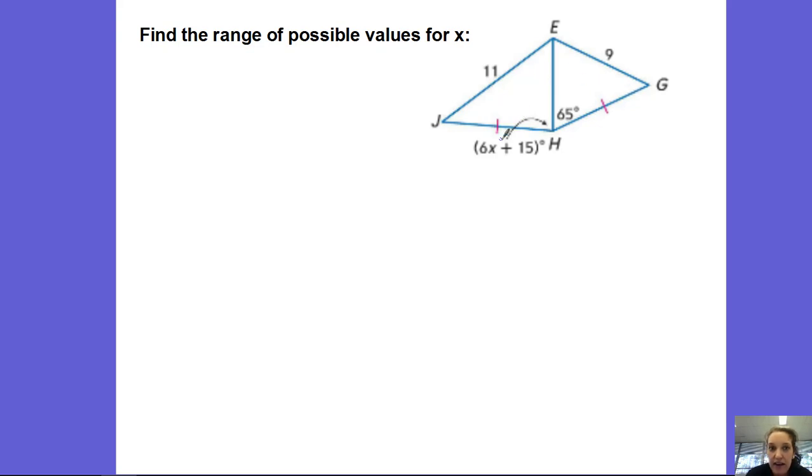Okay, so now we can see that side JE is greater than side EG. Since these two triangles have two sides that are the same, if the third side of one triangle is bigger than the third side of the other triangle, that means that this angle has to be bigger than this angle.